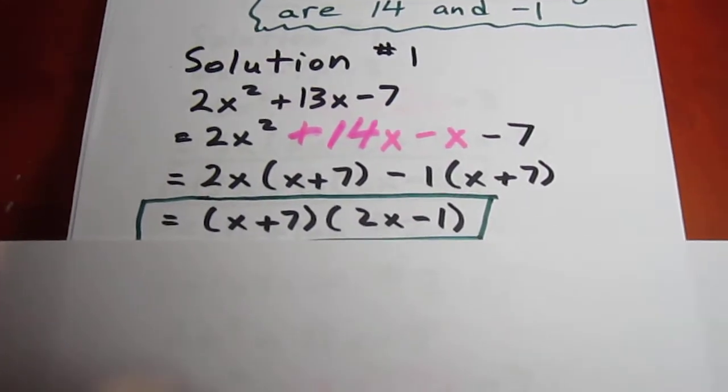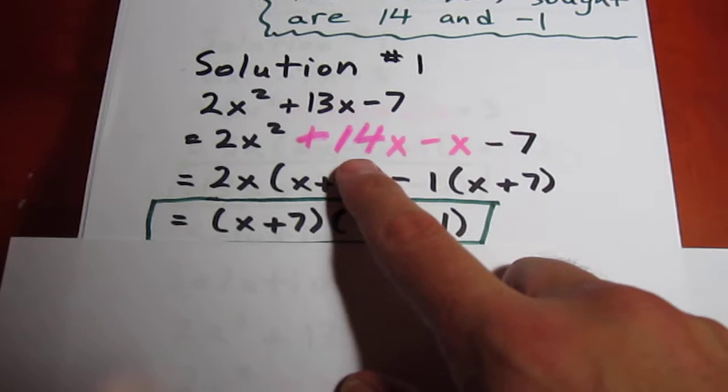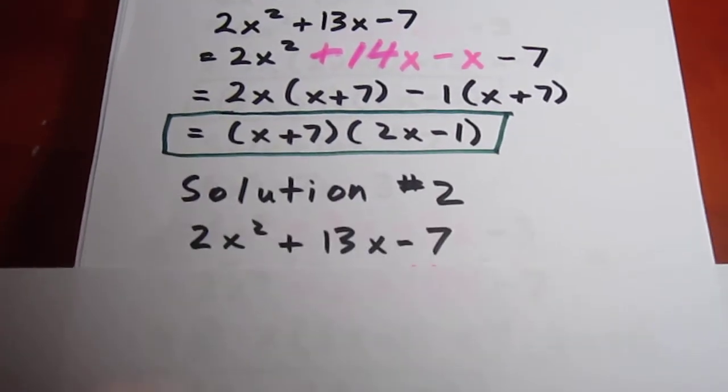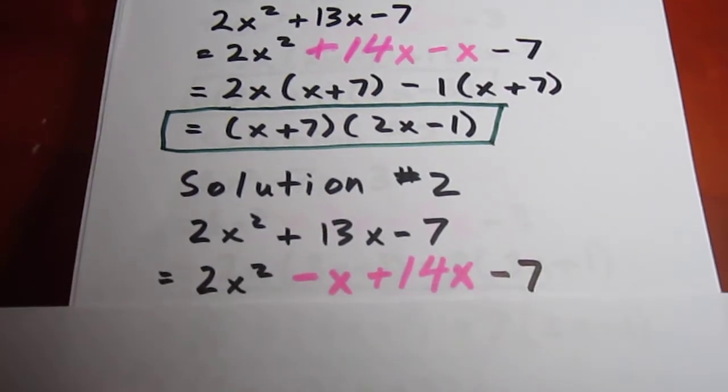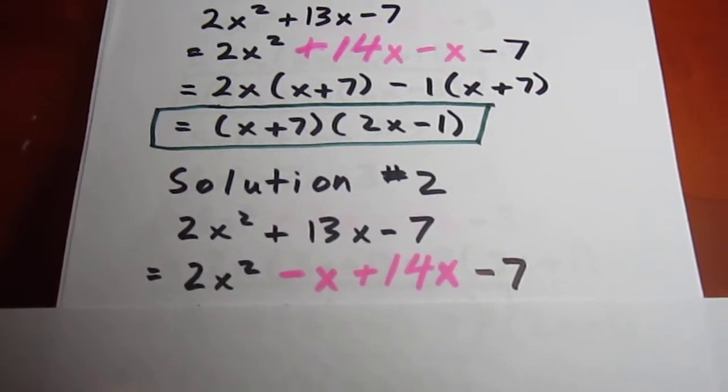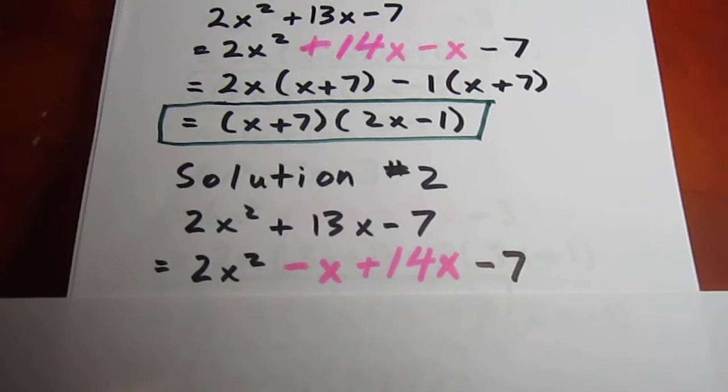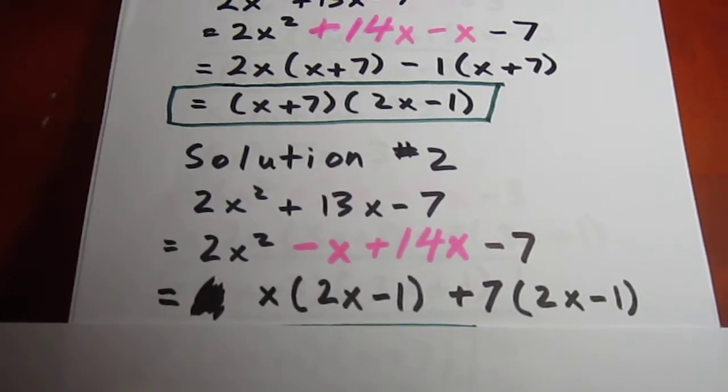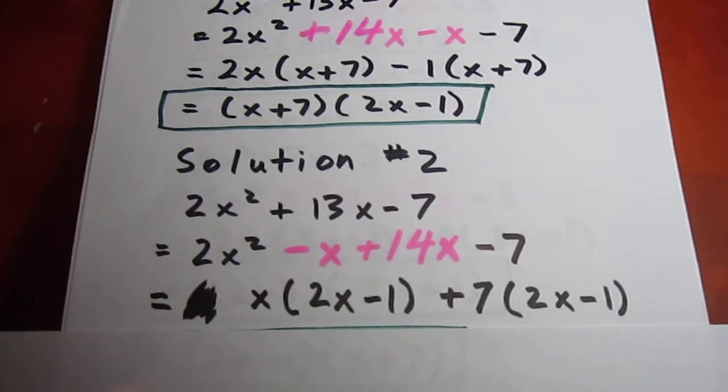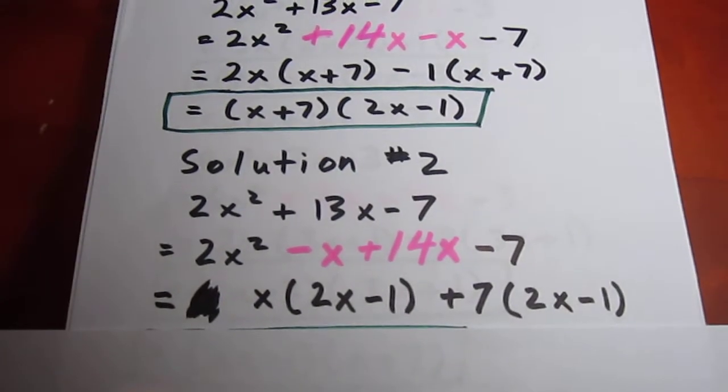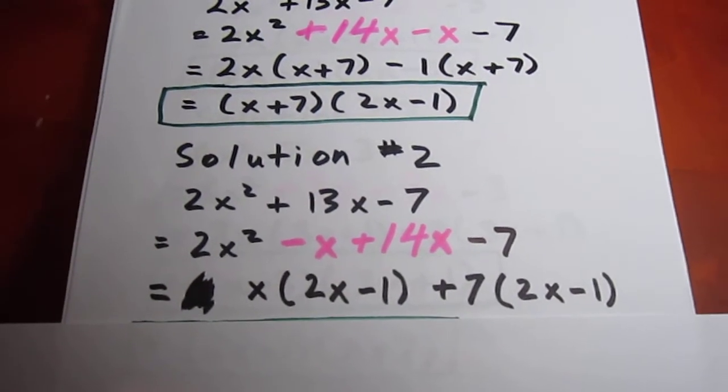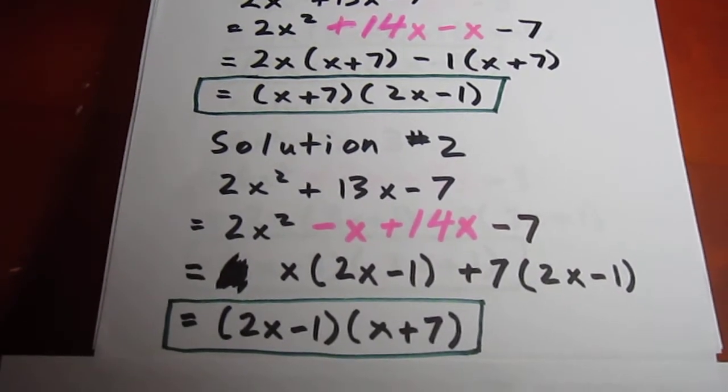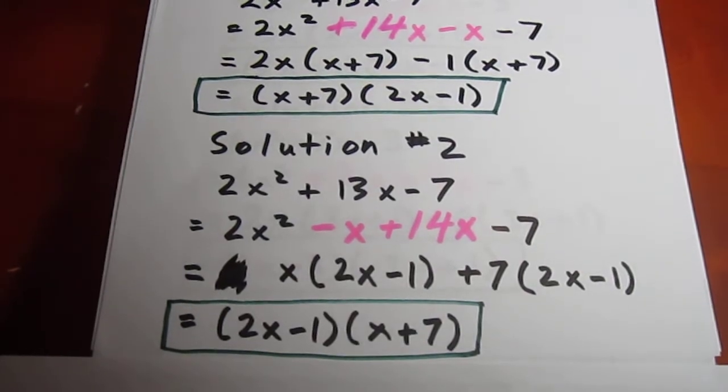Now, you might be saying, but wait a second, what if I had gone the other way and said -x + 14x? The process will still work. We could have 2x² - x + 14x - 7. Common factoring out the first two terms, we common factor out an x. We're left with 2x - 1. Out of the last two terms, common factor out a 7. And we see we have the same binomial factor in each of the two brackets. And so we can state our answer as 2x - 1 times x + 7.